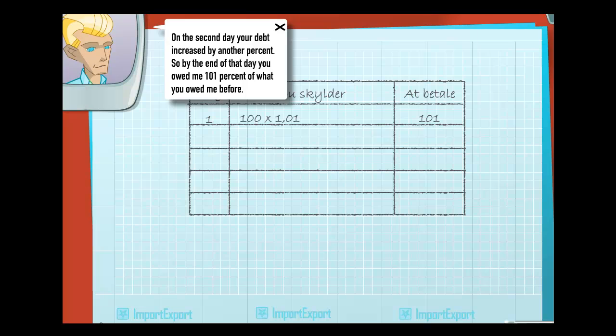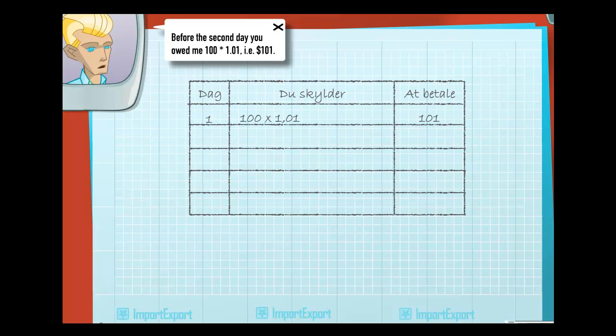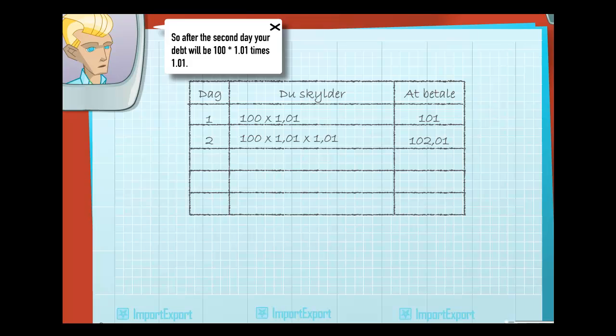On the second day, your debt increased by another percent. So by the end of that day, you owed me 101% of what you owed me before. Before the second day, you owed me 100 times 1.01, i.e., $101. So after the second day, your debt will be 100 times 1.01 times 1.01. So by the end of the second day, you owed me 102.1 dollars, and so on.